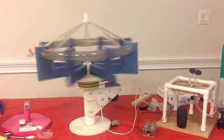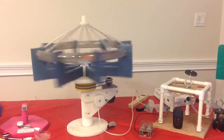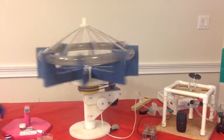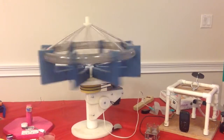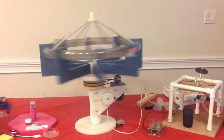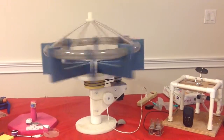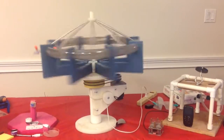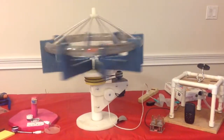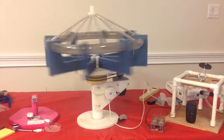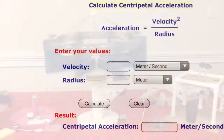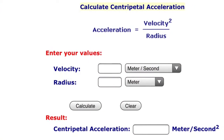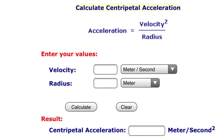We have been asked many questions about the centripetal force experienced by the plants in Eaton. In order to calculate this, we need to calculate the centripetal acceleration of the plants. We use this formula to calculate the centripetal acceleration.